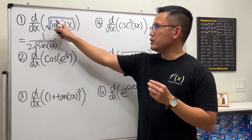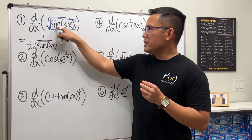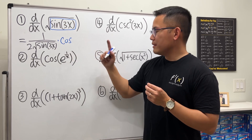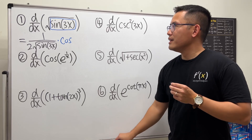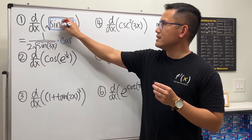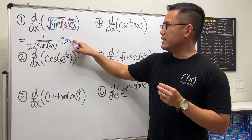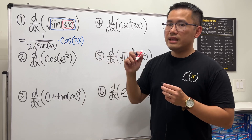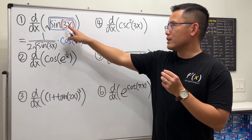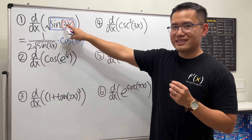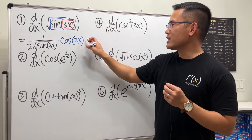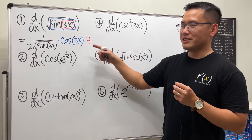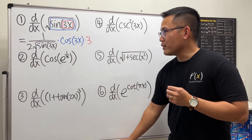Then we differentiate inside. The derivative of sine is cosine, so we multiply by cosine. Inside we have 3x, so 3x stays inside of the cosine. Then the last step: we look at what's inside the box. The derivative of 3x is 3, so we multiply by 3. That's the chain rule applied the first time, and then here's the chain rule for the second time.